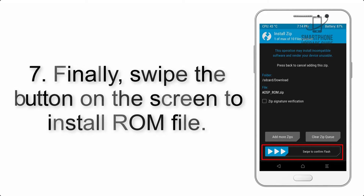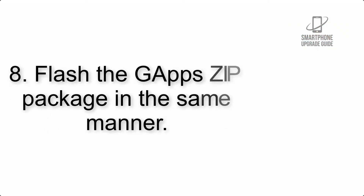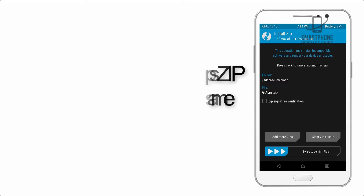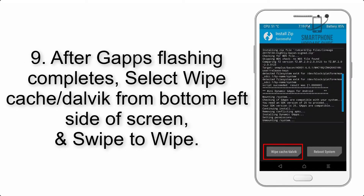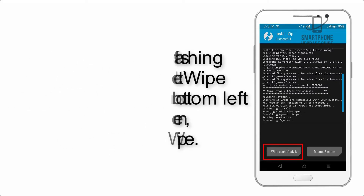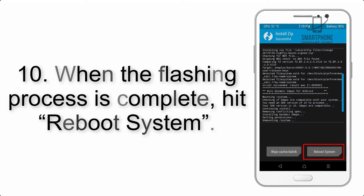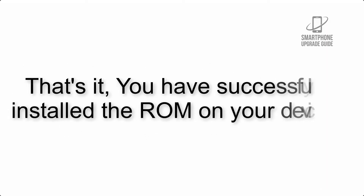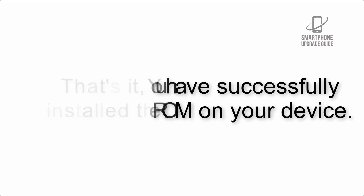Step 8: Flash the GApps zip package in the same manner. Step 9: After GApps flashing completes, select Wipe Cache and Dalvik from the bottom left side of the screen and swipe to wipe. Step 10: When the flashing process is complete, hit Reboot System. That's it — you have successfully installed the ROM on your device.